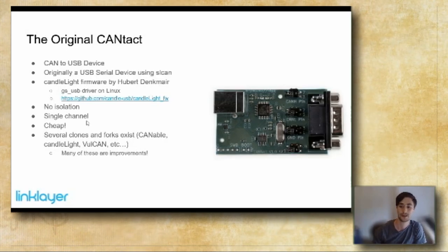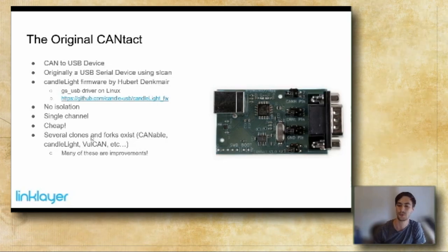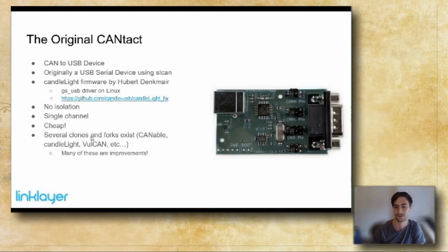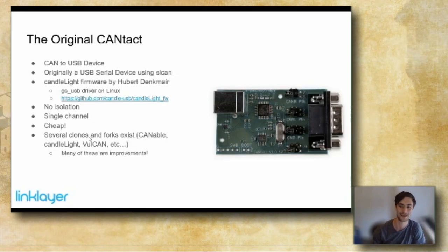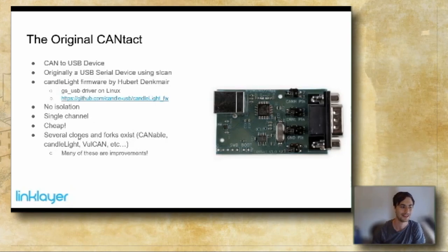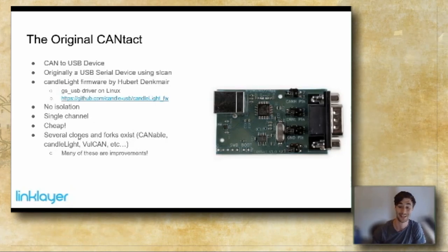It was cheap — around 50 bucks — and it got cloned and forked quite a bit. There was the Cannibal, the Candlelight fork, the Vulcan, and more. A lot of those actually improved on the design in various ways, and it was really cool to see people take your design and make something new out of it.